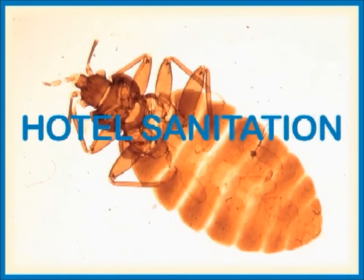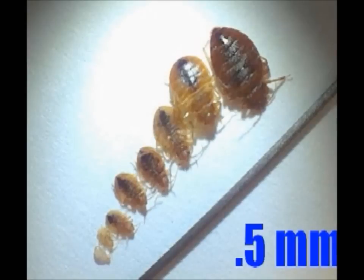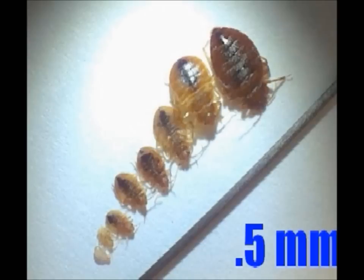Bed bugs are wingless insects, roughly oval in shape, flat, and 5 to 6 millimeters — that is a fifth to a quarter of an inch — long when fully grown. They are pale cream in the juvenile stages, becoming rust brown as an adult, and change to a deeper red-brown following a blood meal. There are five juvenile stages known as nymphs, which are miniature versions of the adults. Each nymphal stage requires at least one blood meal to molt to the next stage, and the length of the life cycle is variable and dependent on temperature.